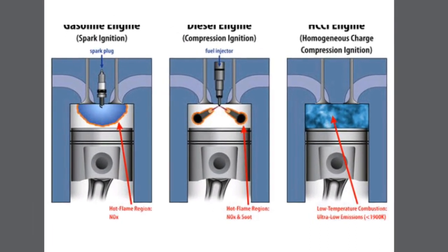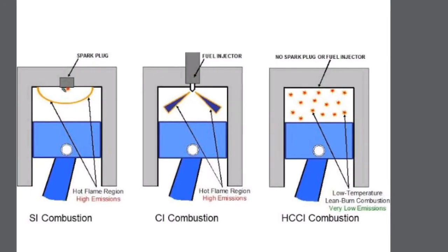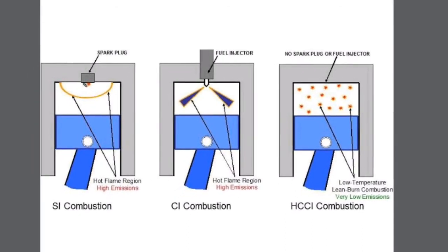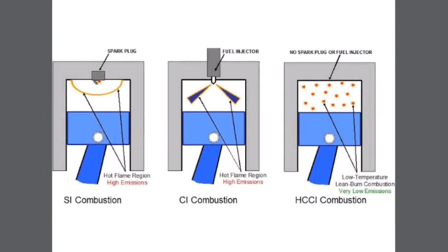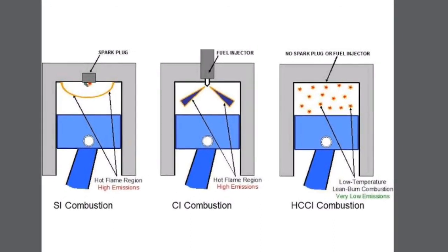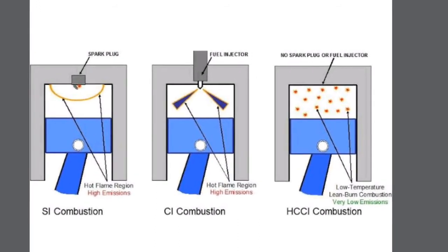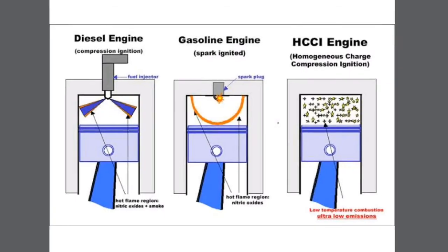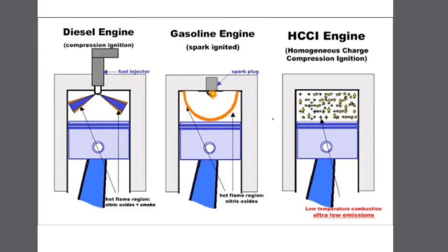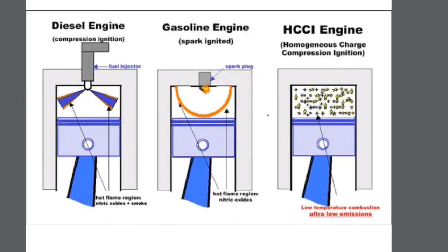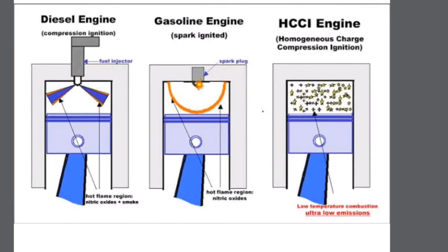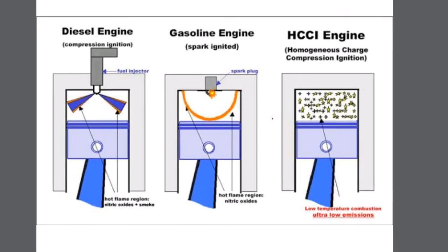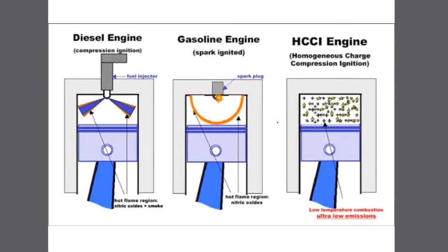The problem with diesel engines is that because of direct injection, we are not able to create a homogeneous mixture, so the engine runs in a heterogeneous mixture range, which reduces mixing efficiency and limits the power output for a given displacement. In an HCCI engine, we are able to create a homogeneous mixture without compromising the higher combustion efficiency of the compression ignition strategy — giving us the best of both worlds.